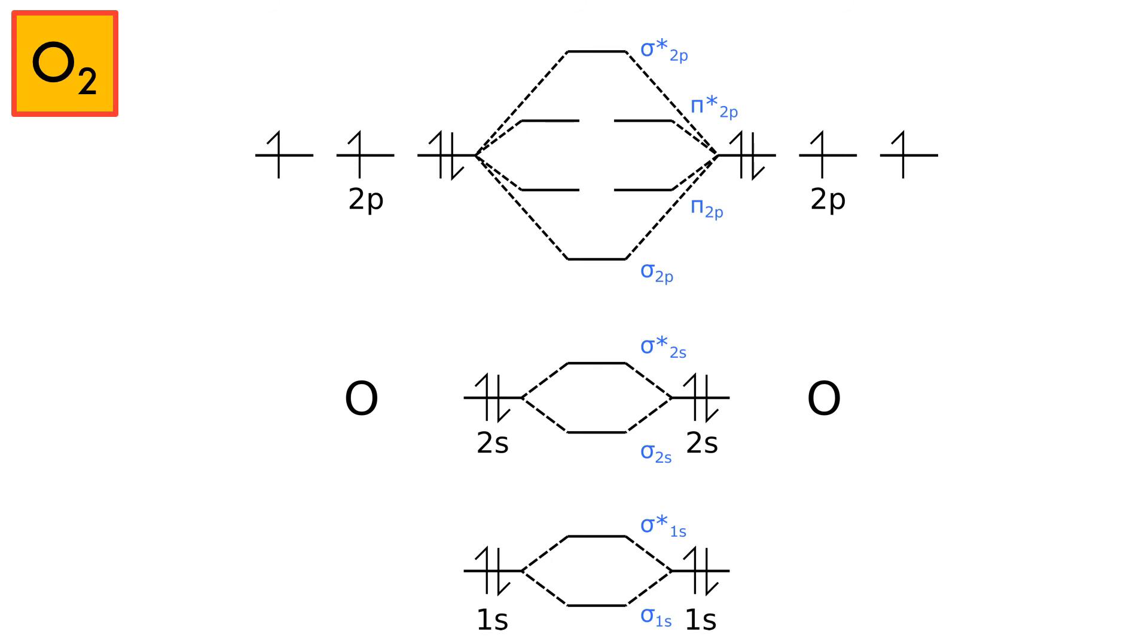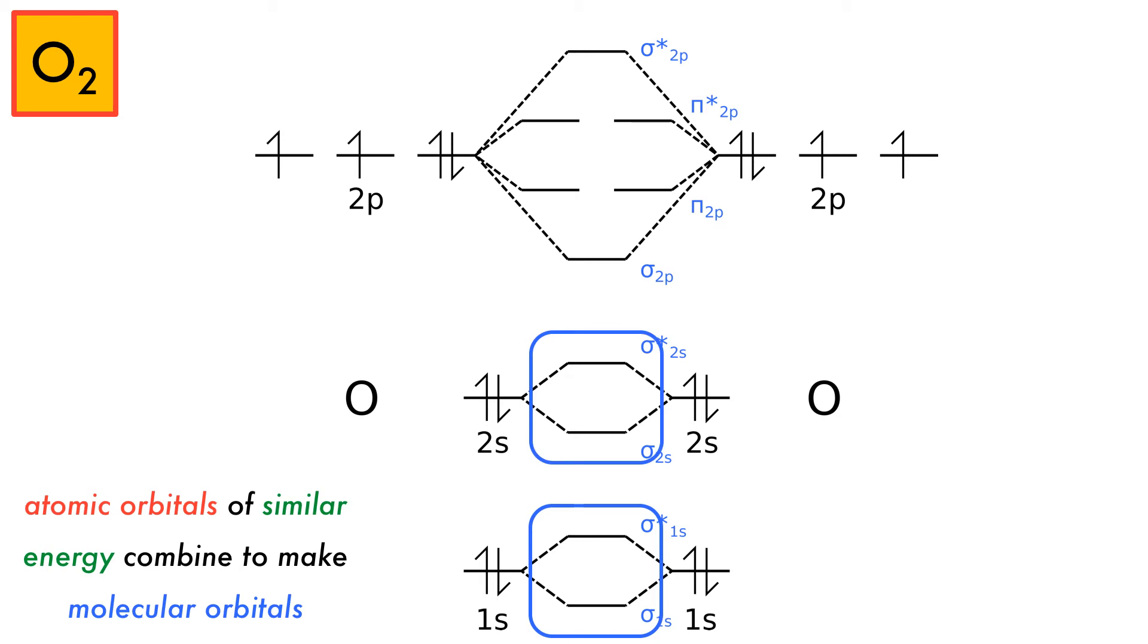Let's turn to dioxygen. Here the atomic electronic configuration for each oxygen is written out explicitly. In the center we have the molecular orbitals. The atomic orbitals of similar energy combine to make molecular orbitals. The two 1s orbitals combine to make a sigma and sigma star orbital. The same happens with the 2s orbitals.